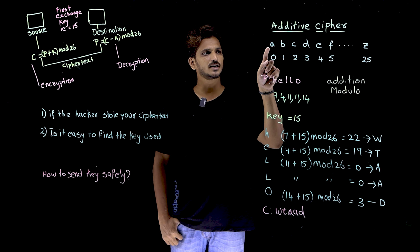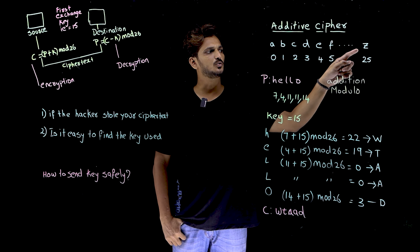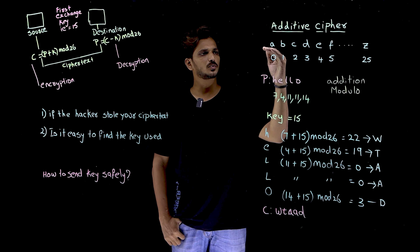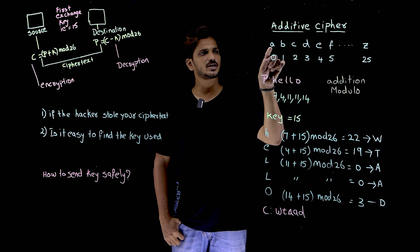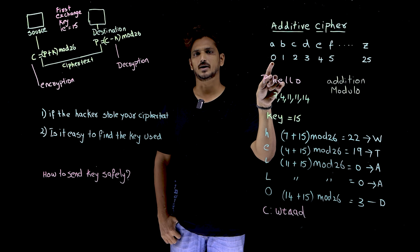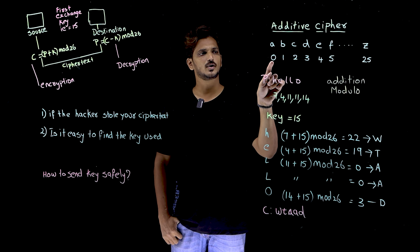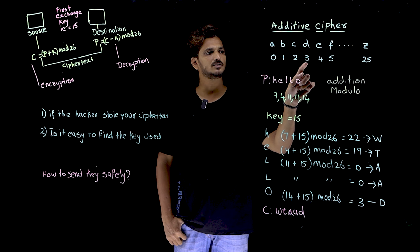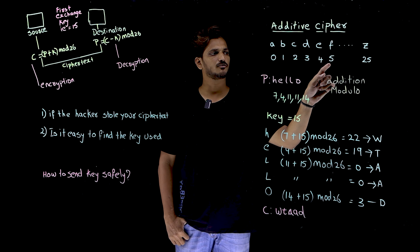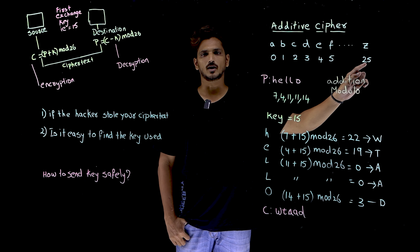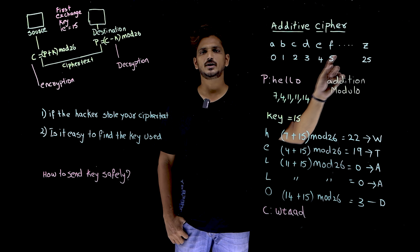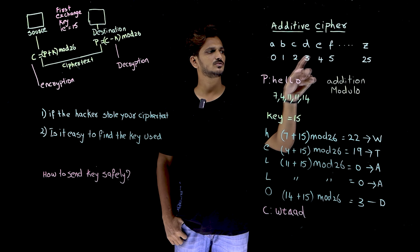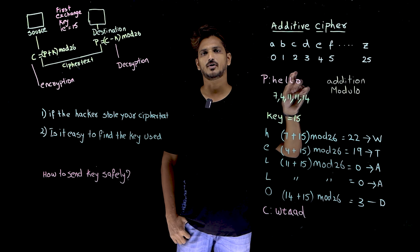For characters, we are taking characters A, B, C, D, E, F up to Z. In additive cipher, we are going to provide a number for each character. For A we provide 0, B is 1, C is 2, D is 3, E is 4, F is 5, and so on up to Z, which is 25. We started from 0, that is why Z is 25.